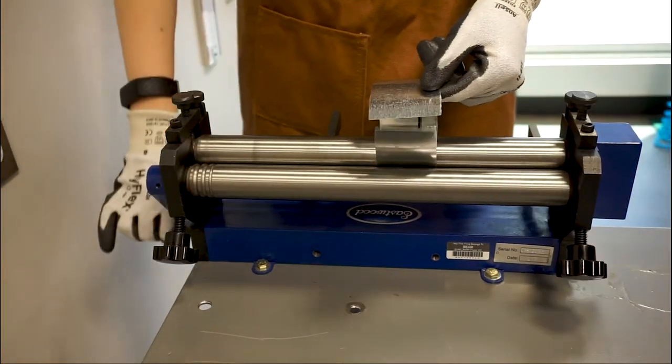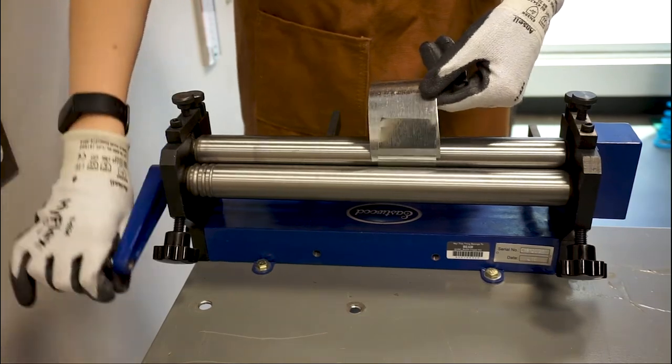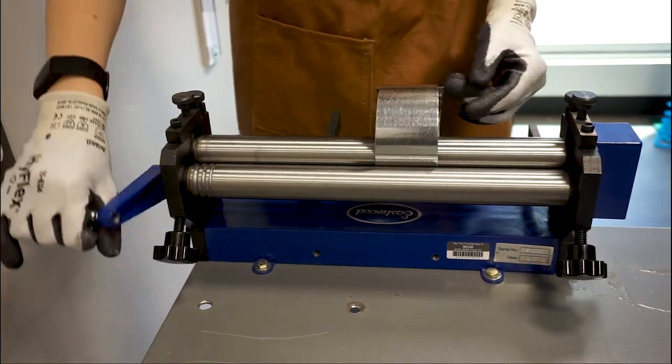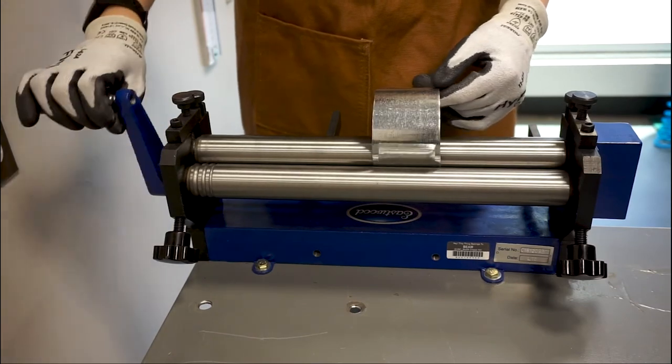Once your material is secured between the rollers and the knobs are properly tightened, turn the handle back and forth to bend the metal into shape. You can continue to tighten the knobs while bending your material to get a smaller diameter.